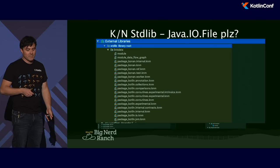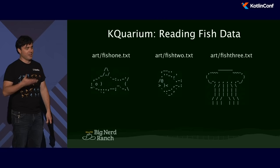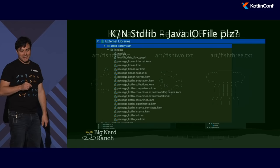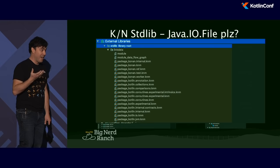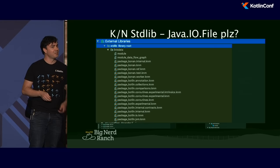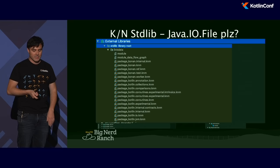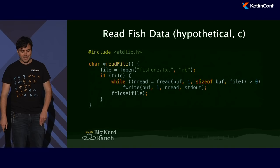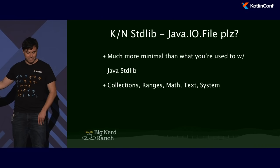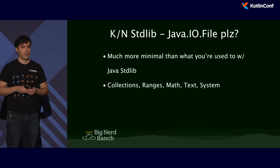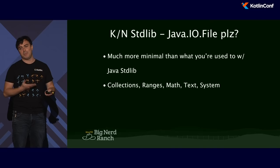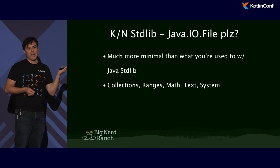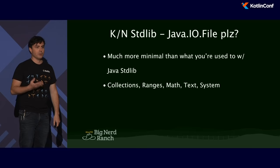I've got my fish that I need to load up for the aquarium. How am I going to do that? Where is my java.io.File class? Looking at the .knm file — the standard library in Kotlin Native is way more minimal than what you're used to from Java development. We're totally spoiled by Kotlin's binding between the Java standard library and Kotlin. We don't have that here in the Kotlin Native development toolchain, so it turns out you are actually going to be rolling your own file I/O with POSIX.